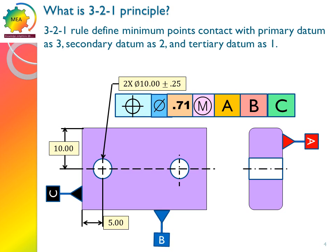3-2-1 rule define the minimum points of contact with primary datum as 3, secondary datum as 2, and tertiary datum as 1.